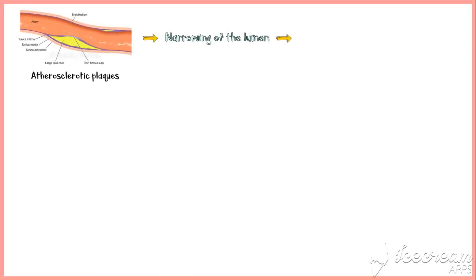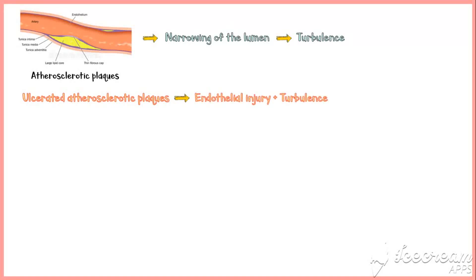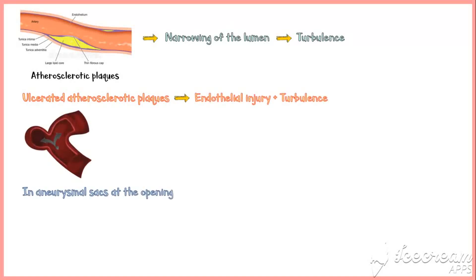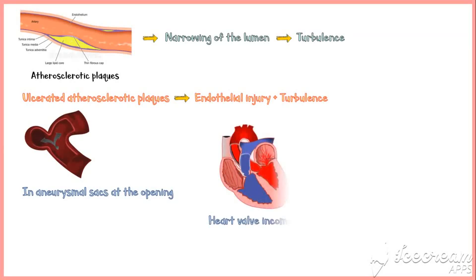Situations where turbulence predisposes to thrombosis include atherosclerosis of the arteries, which causes narrowing of the arterial lumen leading to turbulence and thrombosis. When these plaques get ulcerated, both endothelial injury and turbulence contribute. In aneurysmal sacs at the opening, blood flow is turbulent and can predispose to thrombosis. Heart valve incompetence also disrupts laminar flow and predisposes to thrombosis.